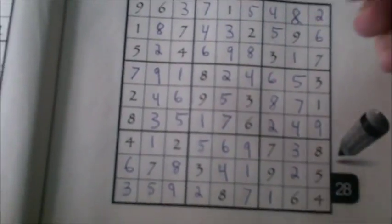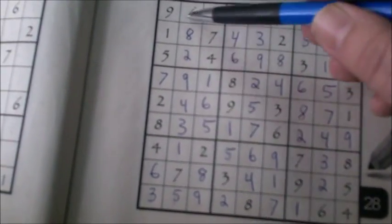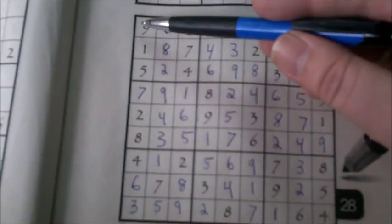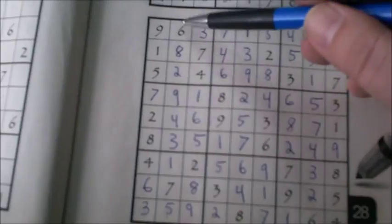Now looking at one of the ones I've already completed, bring that into the light a little bit. If you notice, this is one through nine, one through nine. Like I said, you can't have the same number twice in a row, in a square, or in a row this way.